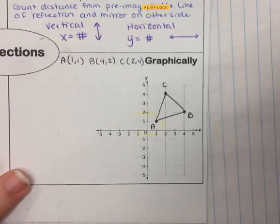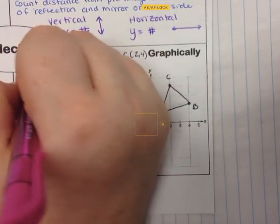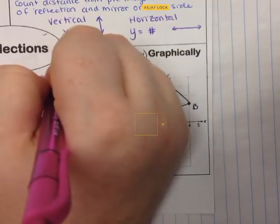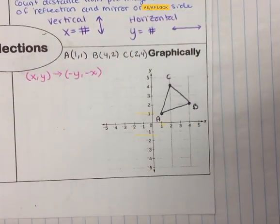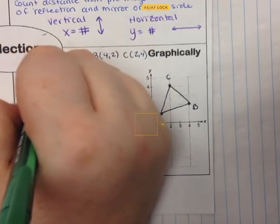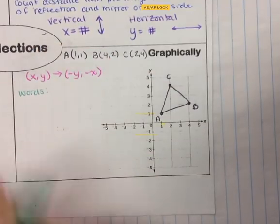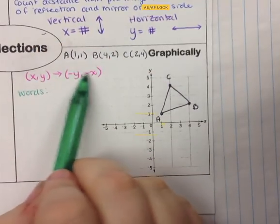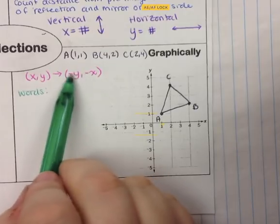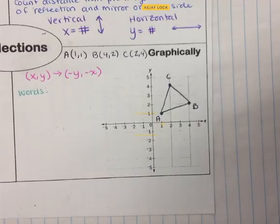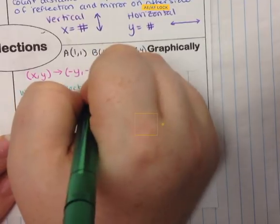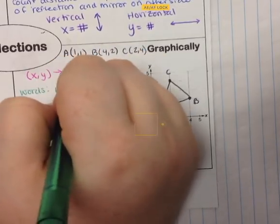Given the mapping rule (x, y) maps to (-y, -x), the question is: what rule is this? Thinking about it in words — the x's and y's have been flipped, and both of them have had their signs changed. That is the reflection over the line y equals negative x. So in words: reflect over y equals negative x.